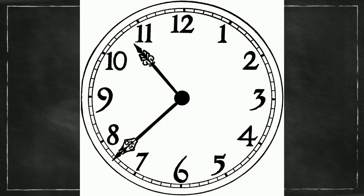Before we go on to calculate the time, let's go through a few things about the clock. The hour hand is the shorter hand and the minute hand is the longer hand. We read time by looking at the hour hand first and then counting the minute hand. Each number on the clock equals 5 minutes.